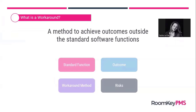We define it as a method to achieve outcomes outside the standard software functions inside RoomKey. That means we have some standard functions that come available out of the box with RoomKey software. If you want to achieve an outcome outside of those standard functions, we recommend a workaround method that involves steps you need to perform manually, or setup that needs to be created inside the database in advance in order to achieve that outcome.